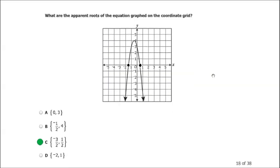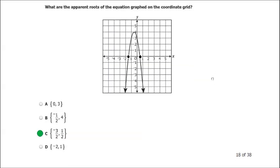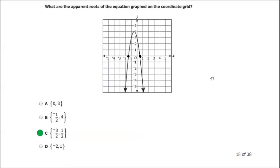What are the apparent roots of the equation graphed on the coordinate grid? Roots, solutions, zeros all mean the same thing. The roots are basically where the graph crosses the x-axis, and they cross the axis here and here. Here, that looks like approximately positive 1 half.